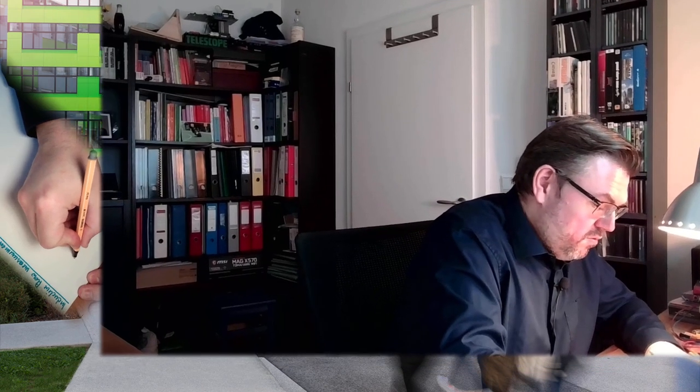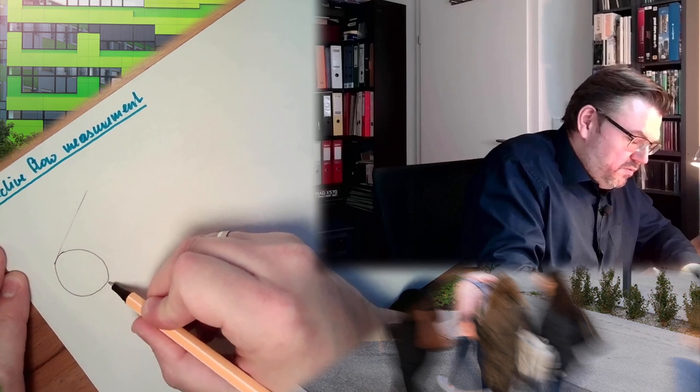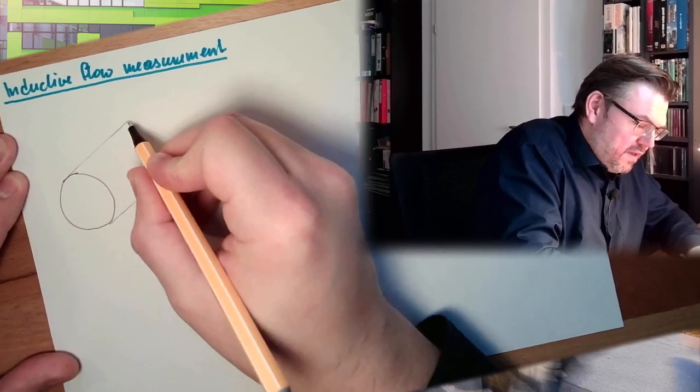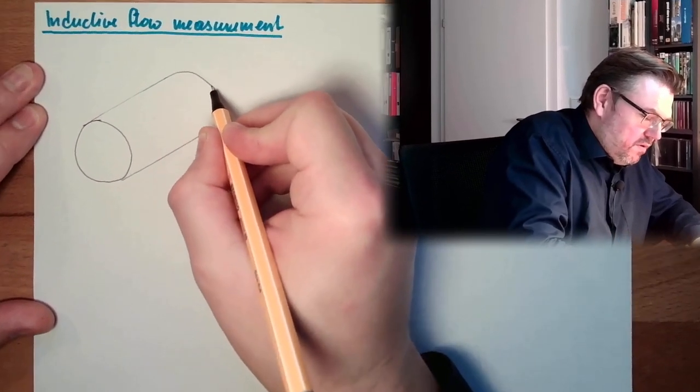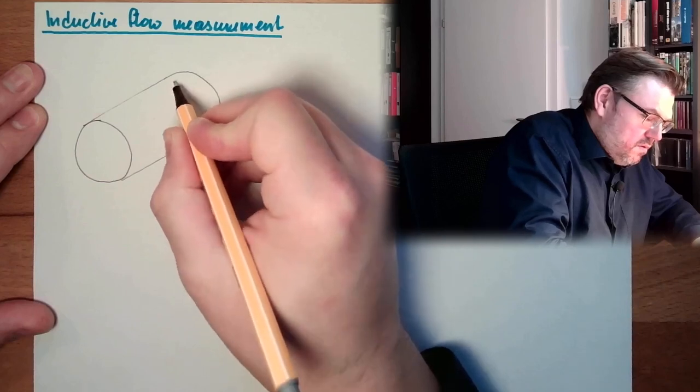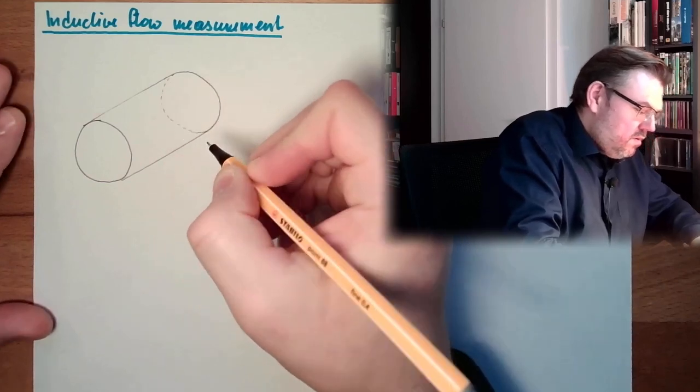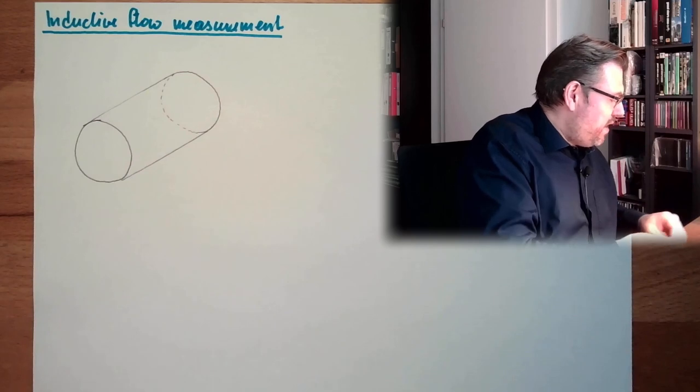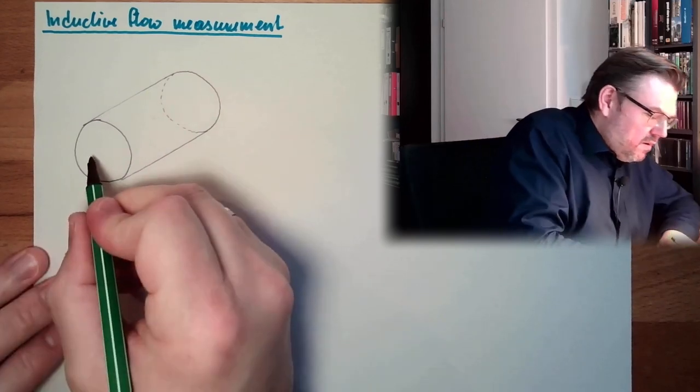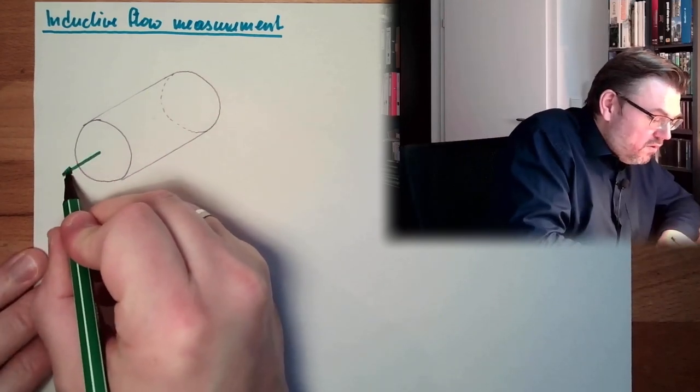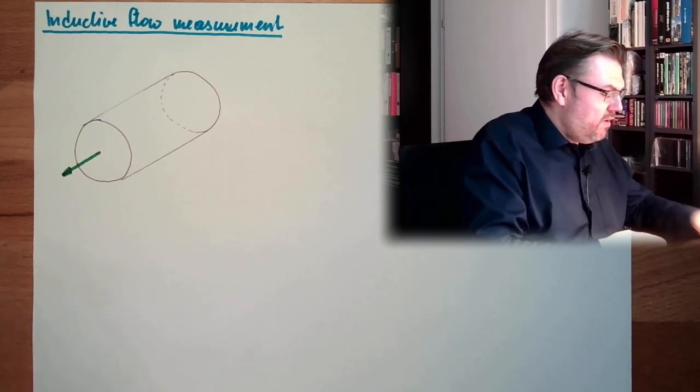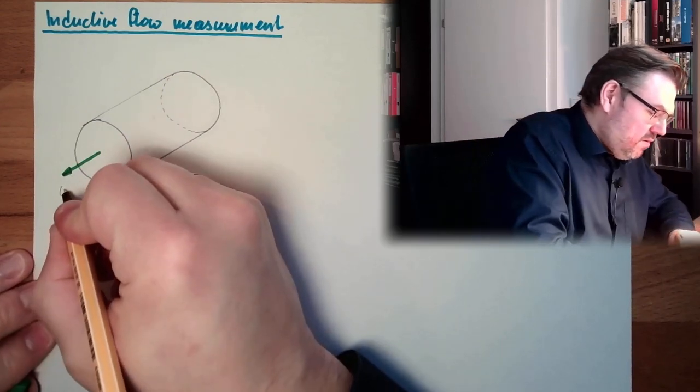Let's say we have a tube, a pipe, and in this pipe there is our streaming gas, liquid or whatever. So in here we have our fluid, and here we have the velocity V.